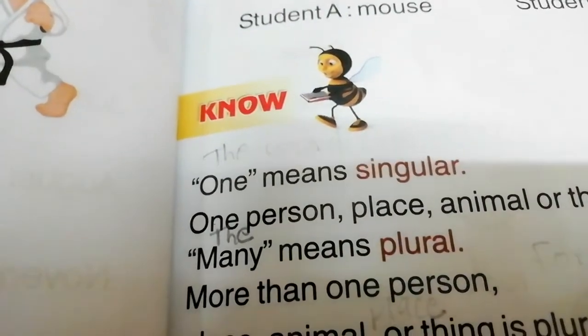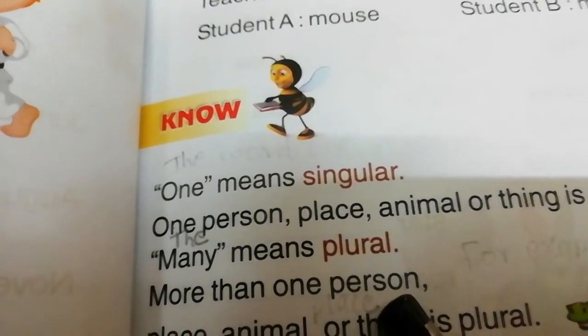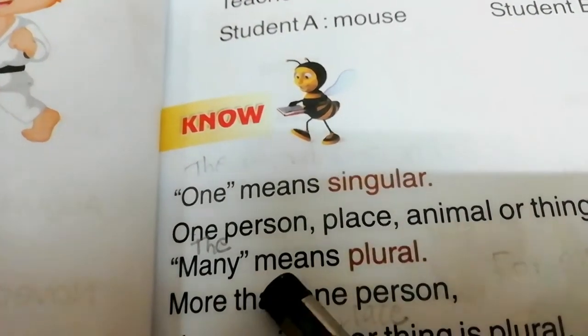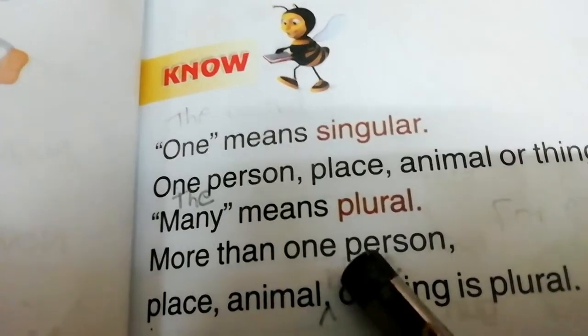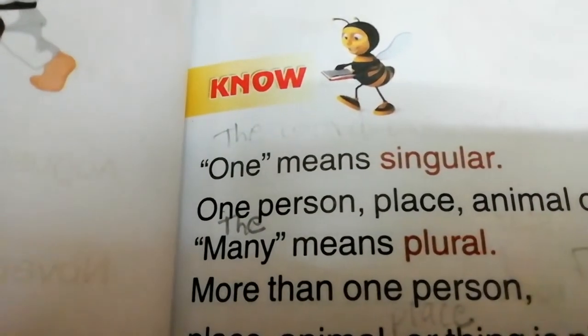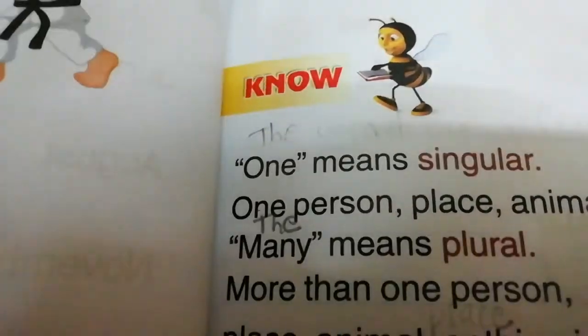Yes, what we learned in this chapter? We learned about singular and plural. Singular means one person, place, animal or thing. And plural means more than one person, place, animal or thing. Hope you all understand the lesson. We can learn more about this chapter when we do our textbook part.